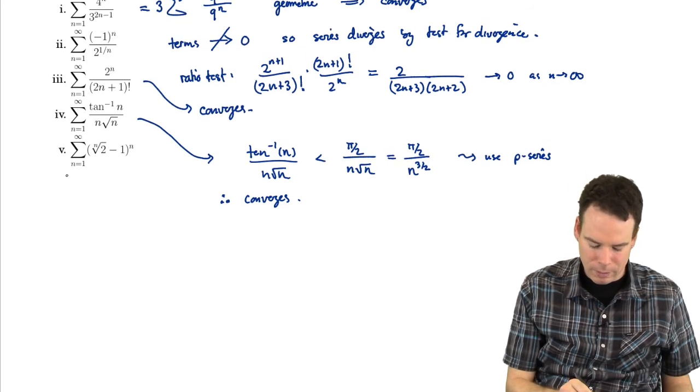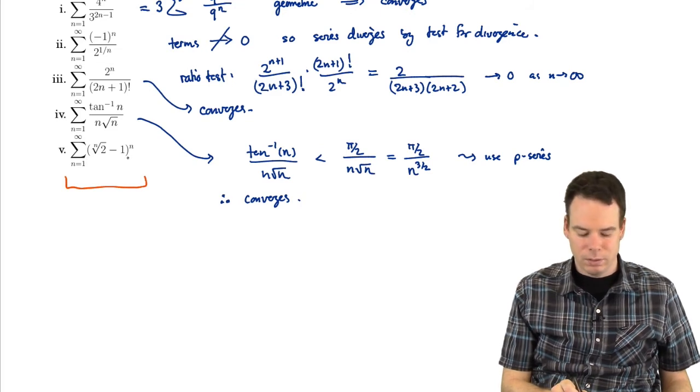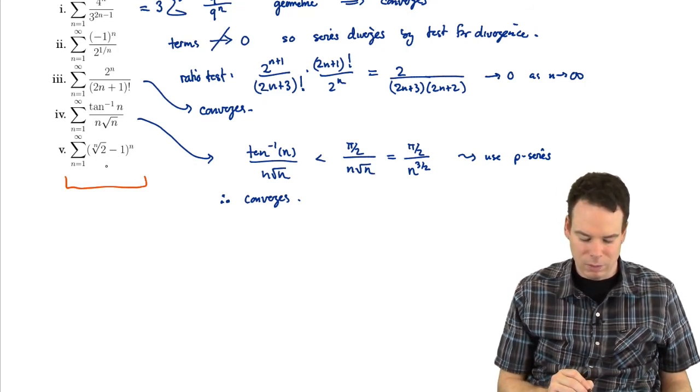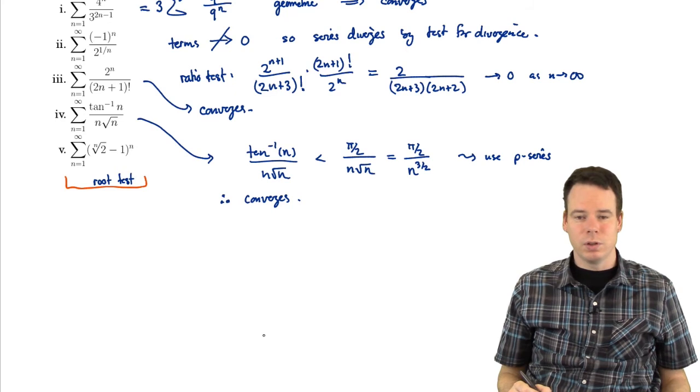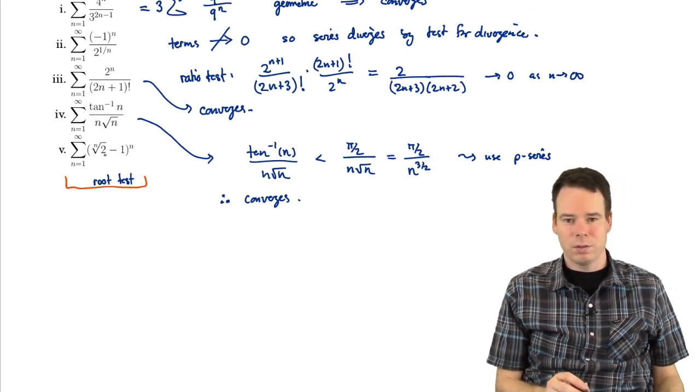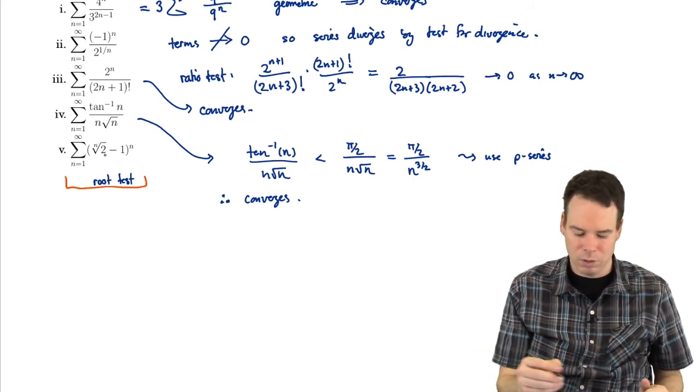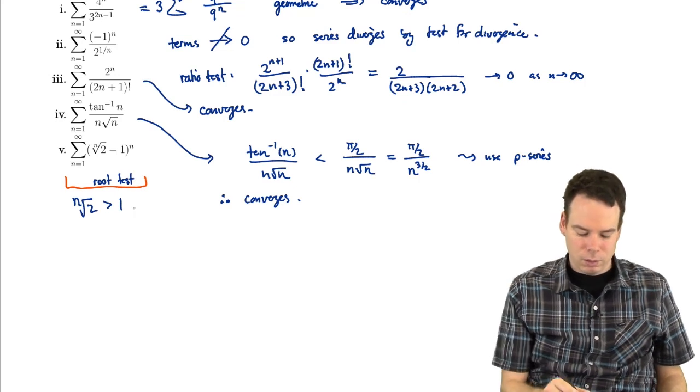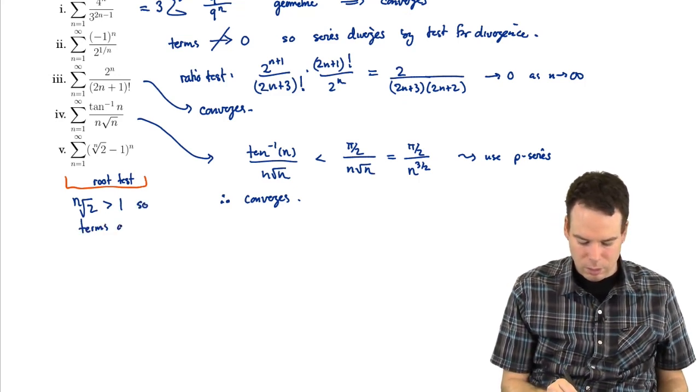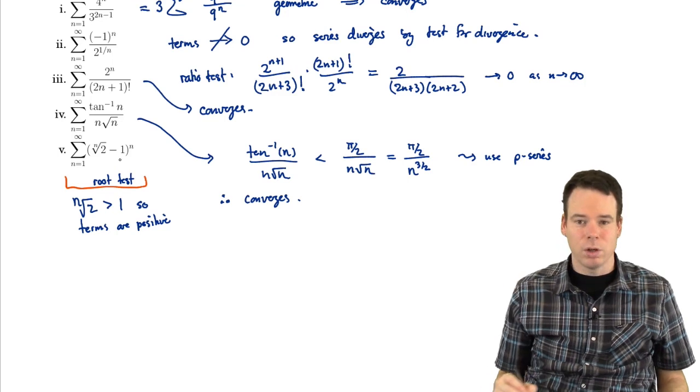What about this last one? This last example here. Well, I notice that each term is an nth power. So this screams to me root test, because if I can take the root, the nth root of the nth term, then things become very nice and simple. So I'm thinking here root test. Now that's going to check for absolute convergence. I need to be careful then that the terms aren't alternating in sign or doing other things, because maybe this thing conditionally converges, but the root test is just going to tell me that it doesn't absolutely converge. Now one thing to note here is that the nth root of 2 is always bigger than 1. So the terms are positive. So it's alright to use the root test and check for absolute convergence, because these things are already positive to begin with.